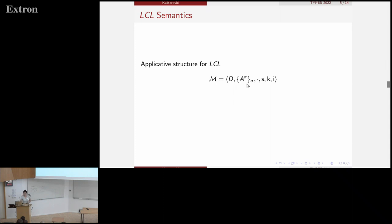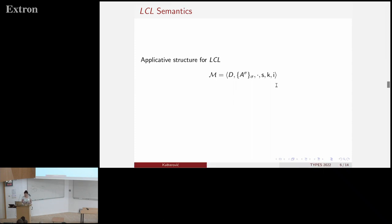We have a binary operation defined on D and elements of the domain SKI, which have to satisfy certain properties. I'm not going here into the details. I don't have time, but I just want to present the general idea of the system. And how we obtain an LCL model? Well, we provide an applicative structure with evaluation where evaluation is actually a map from variables to the domain.